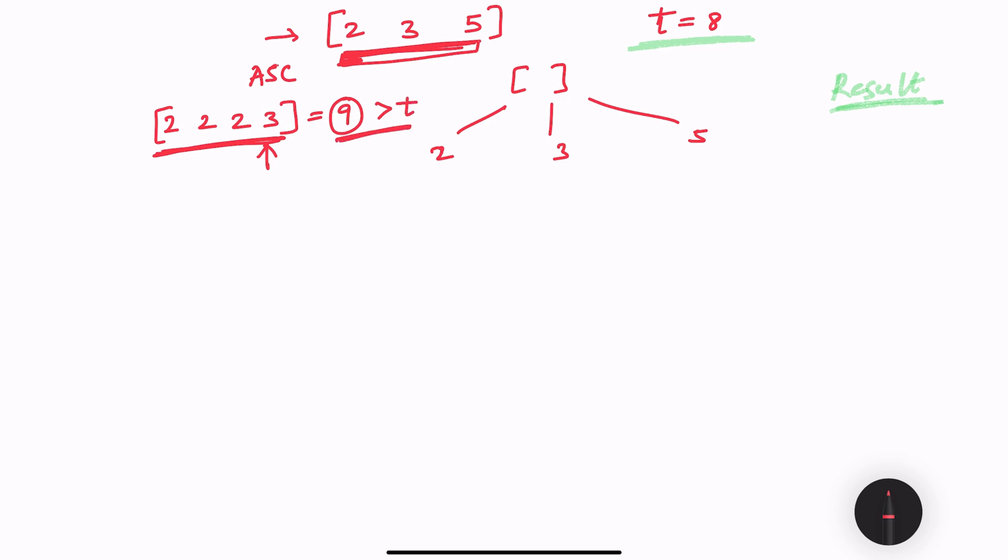we cannot add this solution, but if I can say that my array is sorted, so any number after 5 is also going to give me a sum which is going to be greater than target.